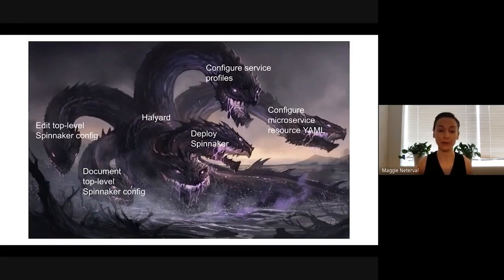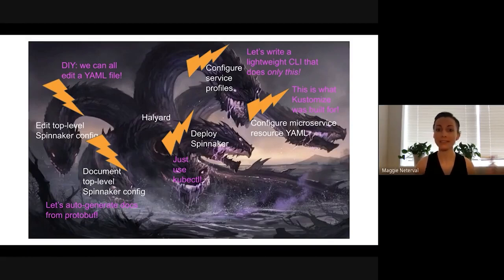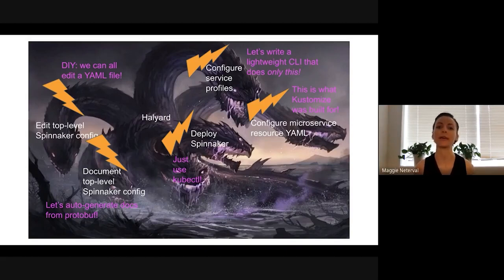Fast forward four years later, we now have other tools that folks who are already using Kubernetes are more used to, to do many of these steps. We no longer need a CLI to edit a YAML file — most folks operating Spinnaker are now comfortable doing that directly. People are now comfortable using kubectl directly, so we don't really need that under the hood either. And configuring the profiles, mounting those into each microservice, and customizing the resource YAML along the way — these are all things that Kustomize is great at.